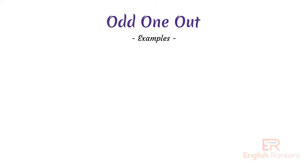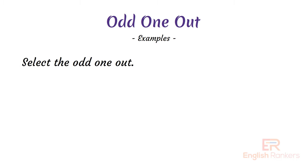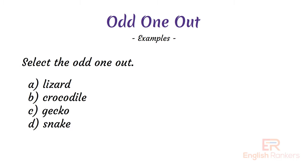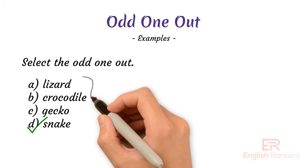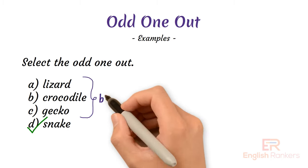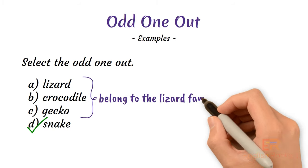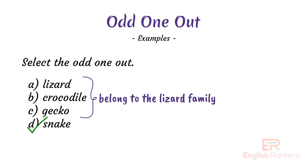Next one: select the odd one out — A) lizard, B) crocodile, C) gecko, D) snake. The correct answer is snake. Lizard, gecko, and crocodile belong to the lizard family, while snake does not belong, so snake is the correct answer.